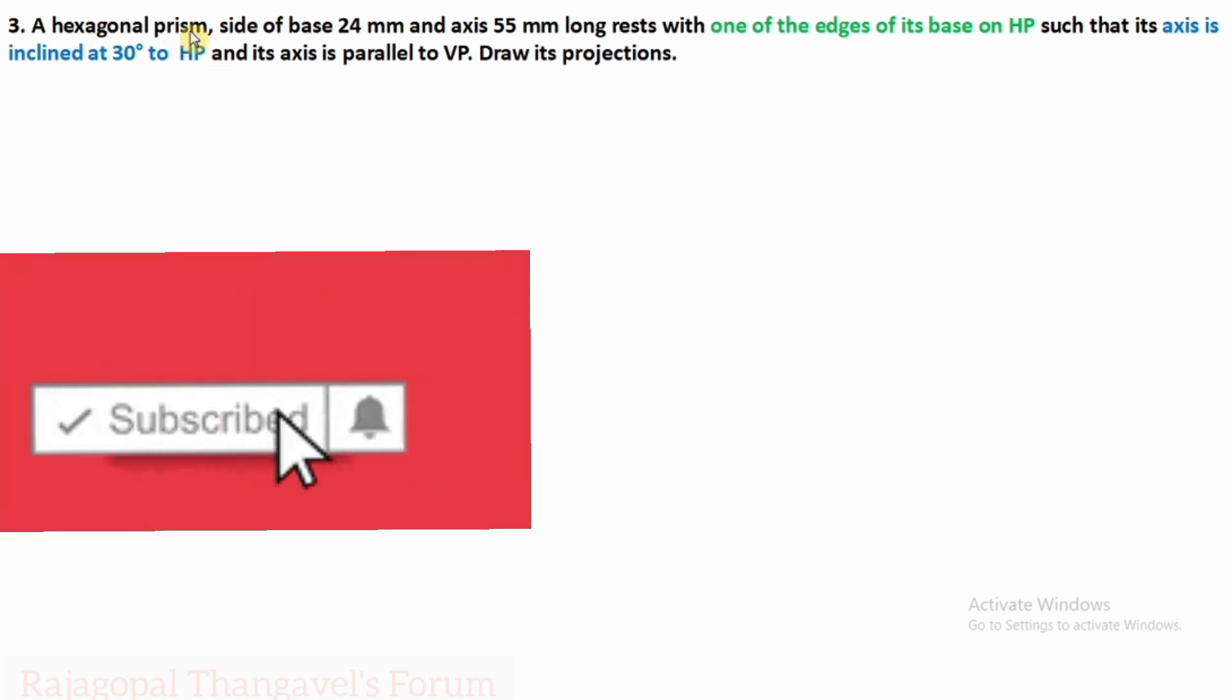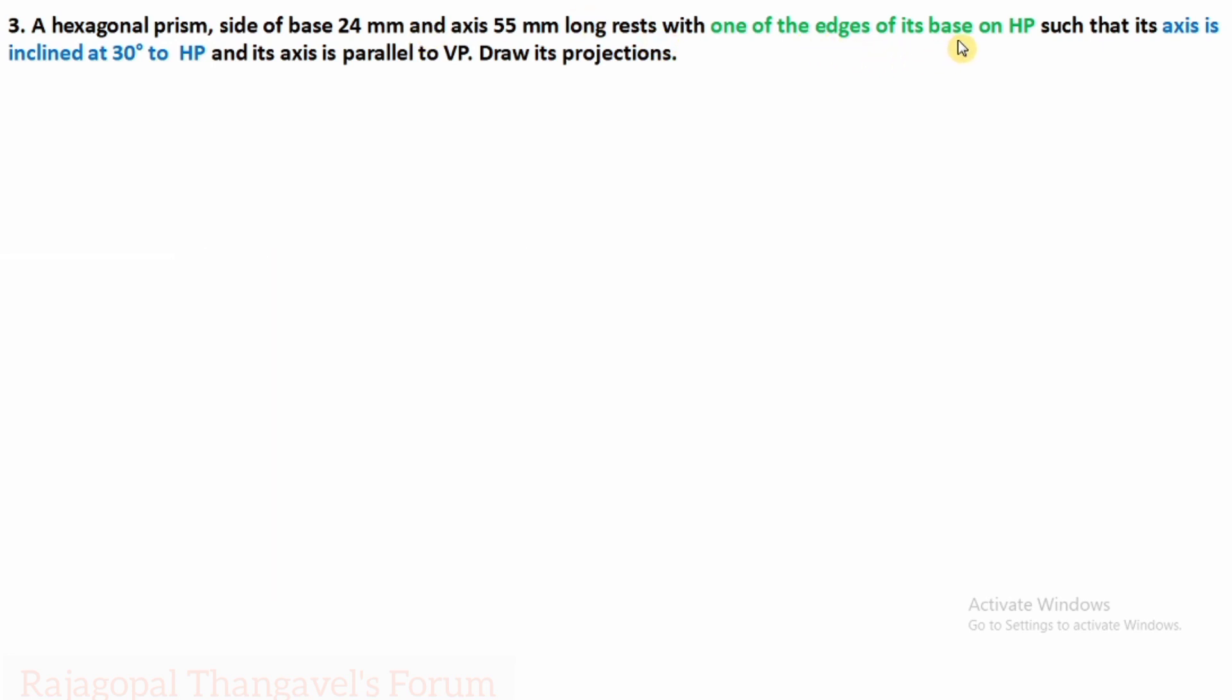Here's the question: A hexagonal prism with side of base 24 mm and axis 55 mm long rests with one of the edges of its base on HP such that its axis is inclined at 30 degrees to HP and the same axis is parallel to VP. Draw its projections.